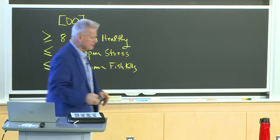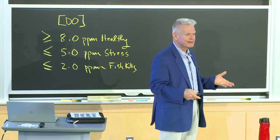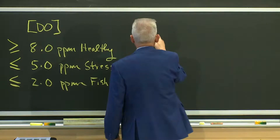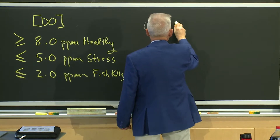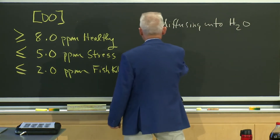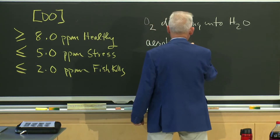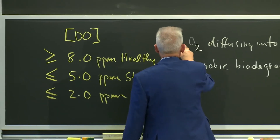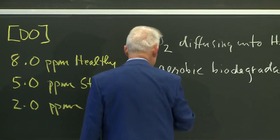Let's take a moment to see how this oxygen gets into the water — this is the big picture. You've got two processes going on. You've got oxygen coming in from the atmosphere and diffusing into the water system. You also have, down below, aerobic biodegradation taking place. So we've got oxygen diffusing into the water, and then we've got aerobic biodegradation. These are the two main processes taking place.